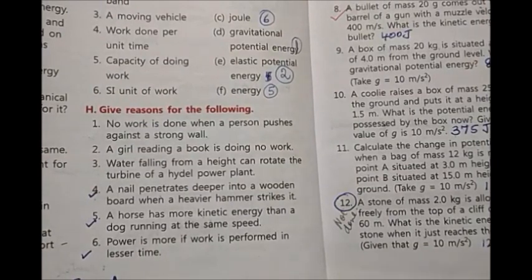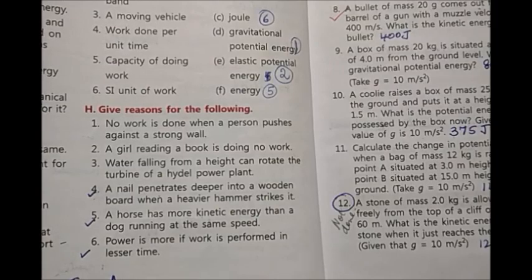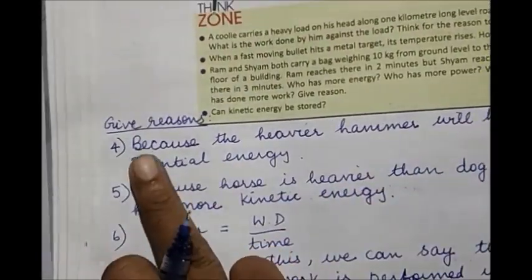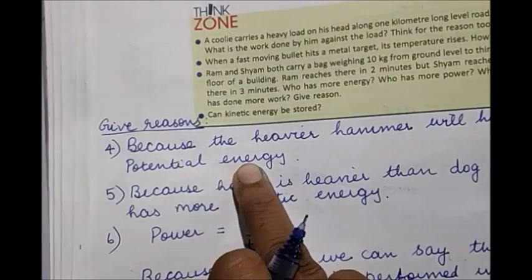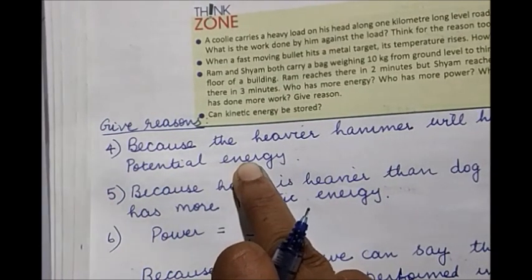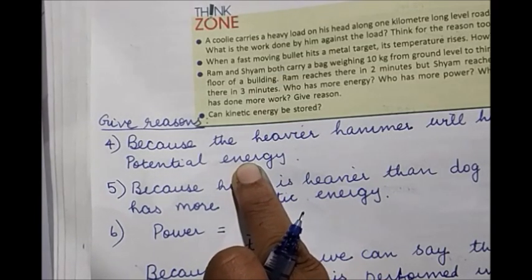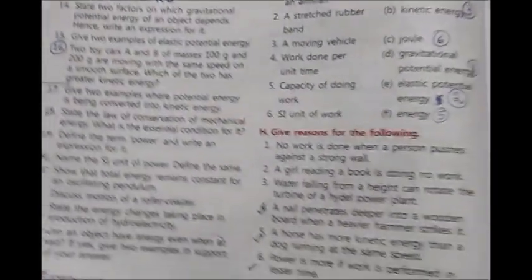Fourth question: A nail penetrates deeper into a wooden board when a heavier hammer strikes it. The answer will be: because the heavier hammer will have more potential energy. More the mass, more the potential energy. Because it is going to have more potential energy, it is going to hit the nail deeper.